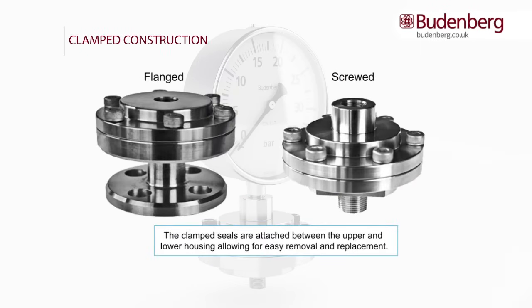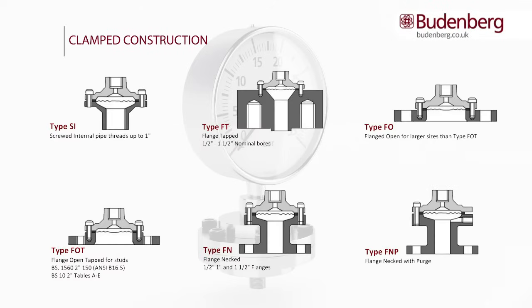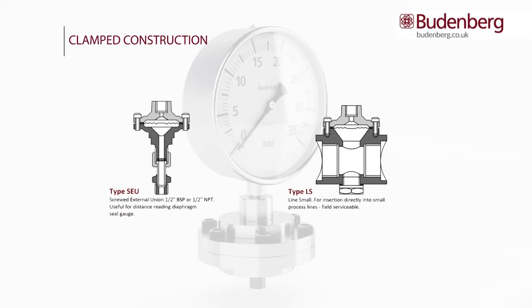The clamped construction is available with either a screwed or flanged connection. Here the diaphragm is clamped between the upper and lower housing, which allows dissimilar materials of construction to be used for the housing and diaphragm. The diaphragm and housing can also be PTFE protected. Budenberg manufactures a wide range of clamped diaphragm seal connections which can also be modified for critical applications. The field serviceable chemical seals provide the option for the removal and cleaning of wetted parts and for the replacement of diaphragms, which in the long term will radically reduce operating costs. It's far more cost effective to replace a diaphragm than a whole assembly, whether connected to a gauge, pressure transmitter or pressure switch.